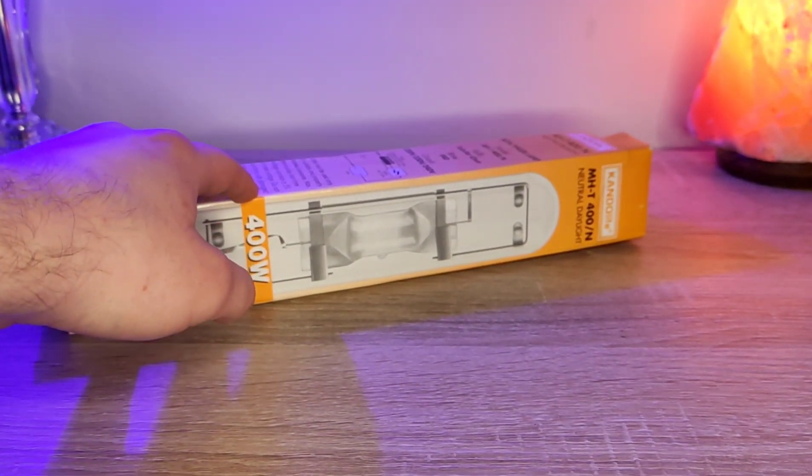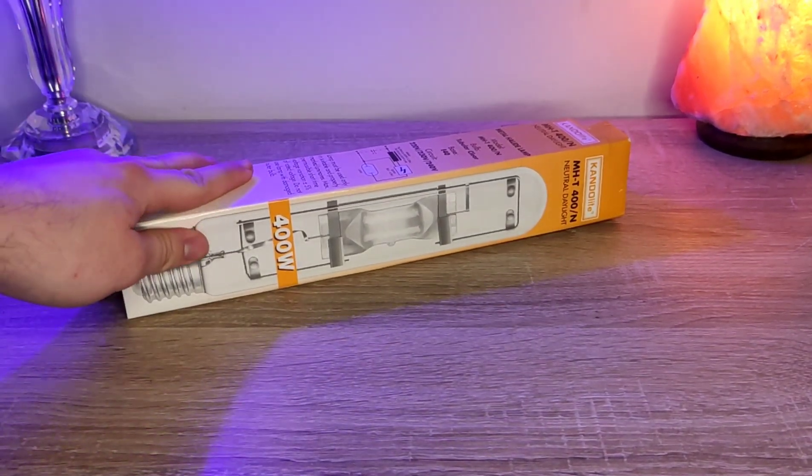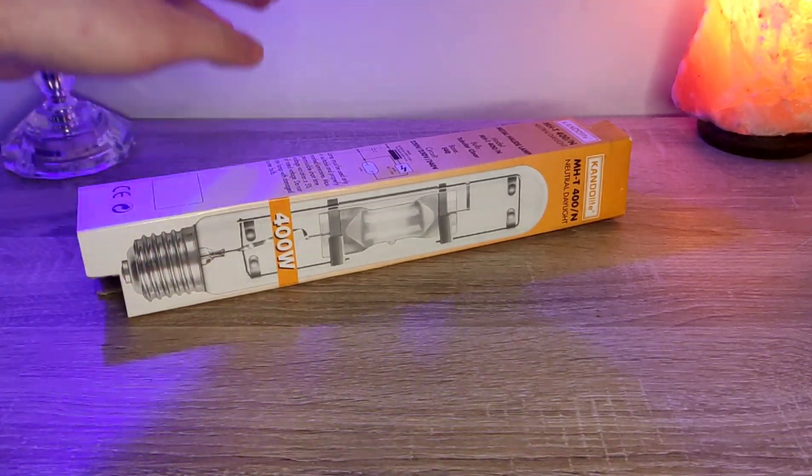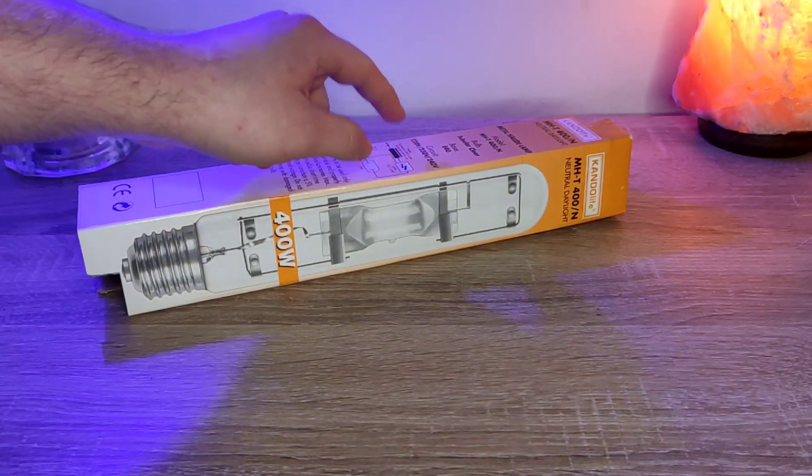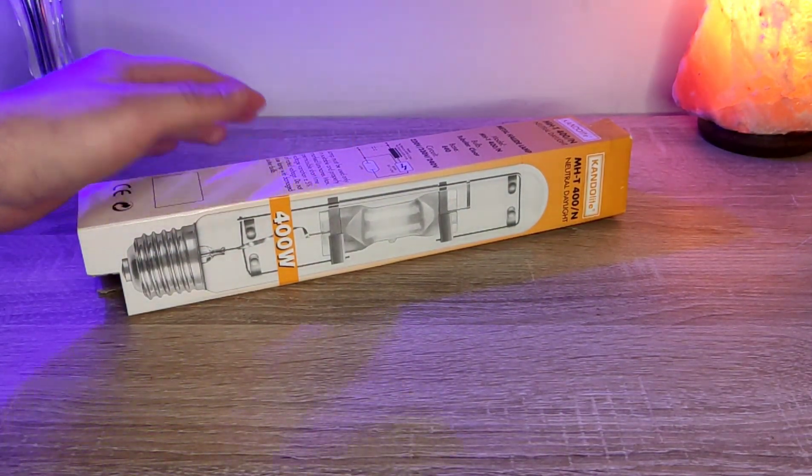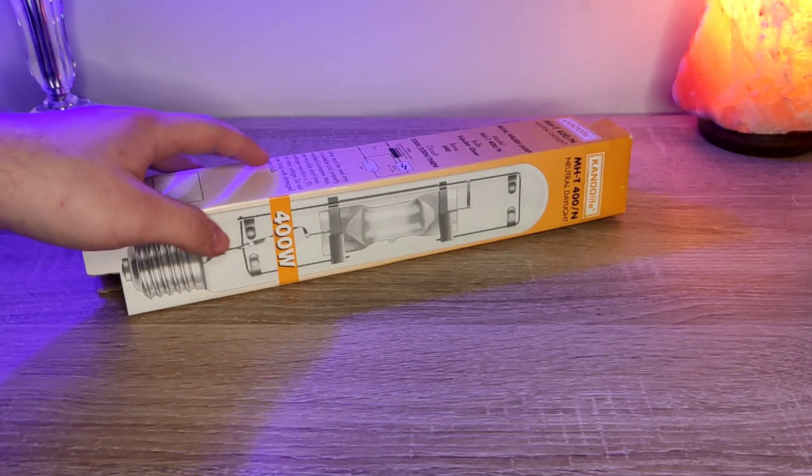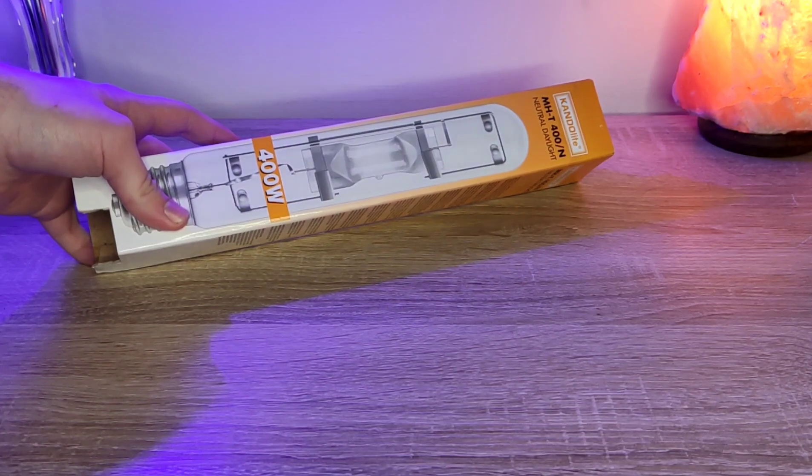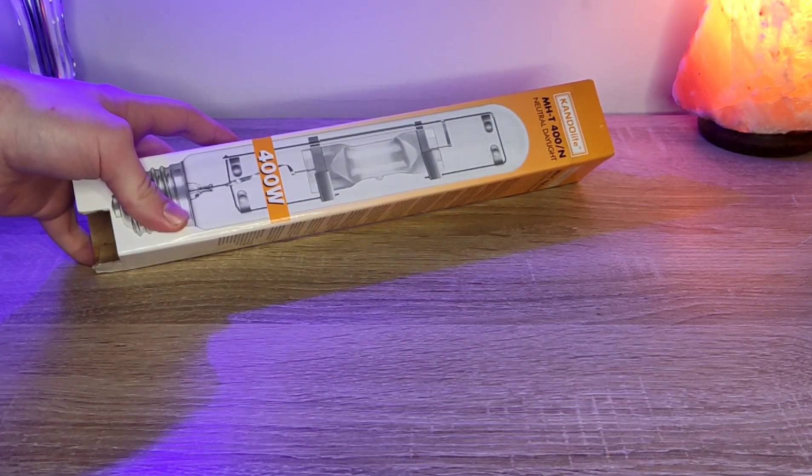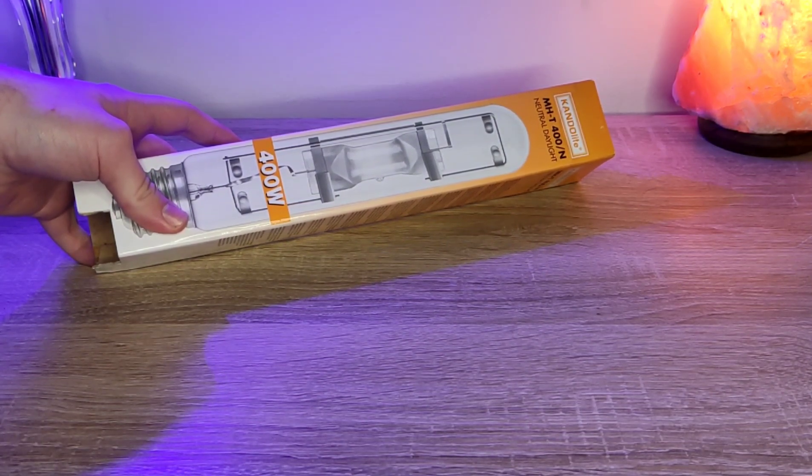So let's get started. What I brought to you today is this big metal halide. This is a 400 watt metal halide. It is a pretty big light bulb and that is something that amazes me at least. So let's actually take a look and why I like to call it the mini sun.